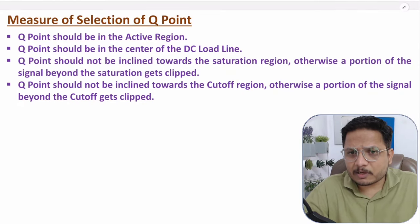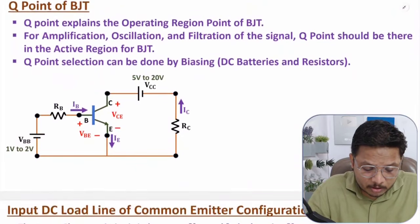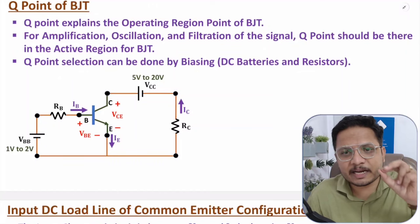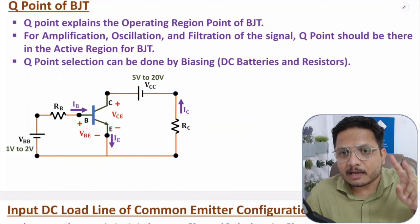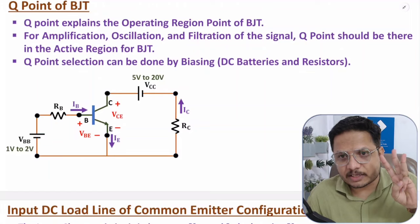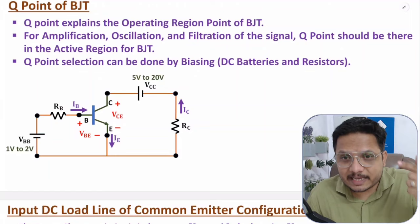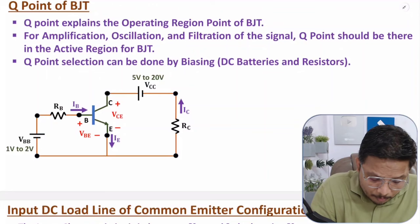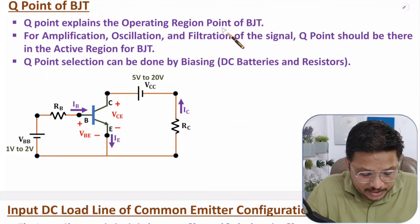Let us first understand what is Q point. When you talk about Q point, you are talking about in which region the BJT operates. BJT can operate in active region, cutoff region, or saturation region. So based on Q point, one can identify in which region the BJT is operating. Q point explains the operating region of BJT.